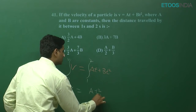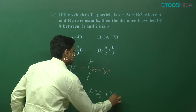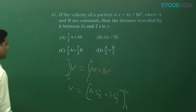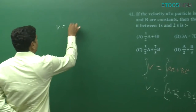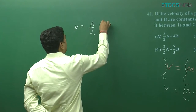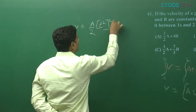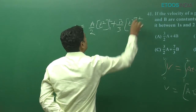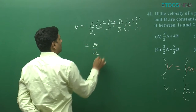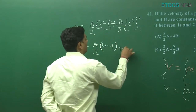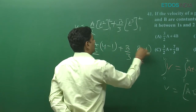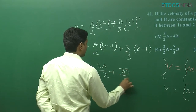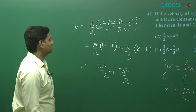Integrating: v = at²/2 + bt³/3, evaluated from 1 to 2. We can write this as: a/2 × [t²] from 1 to 2 + b/3 × [t³] from 1 to 2. This gives a/2 × (4 − 1) + b/3 × (8 − 1), which equals 3a/2 + 7b/3. This is our distance traveled.